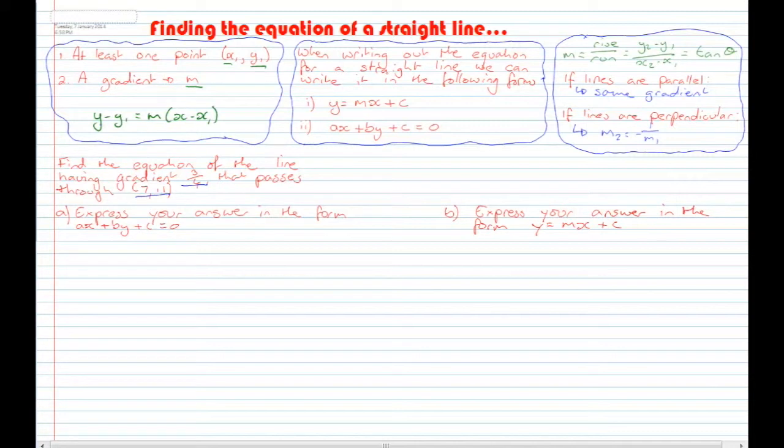So let's write out the formula: Y - Y1 = M(X - X1), where M = 3/4 and my point is (7, 11). That is X1, Y1.